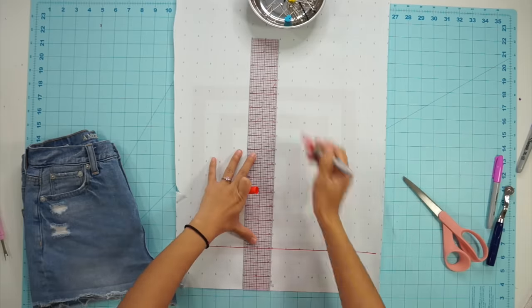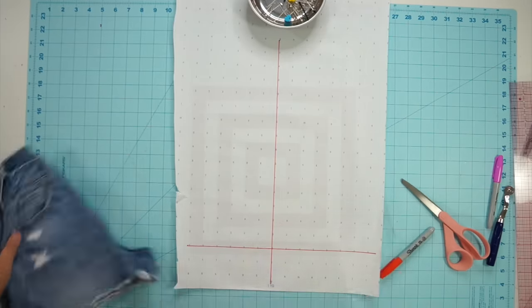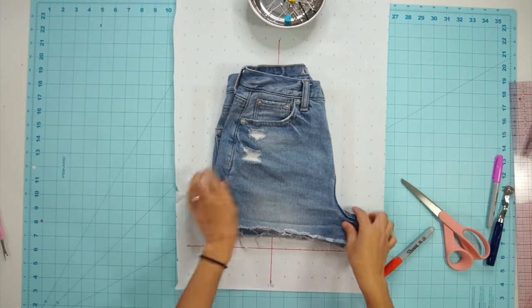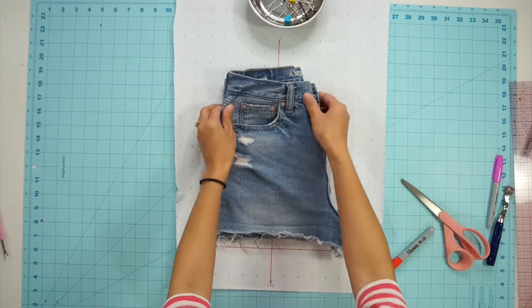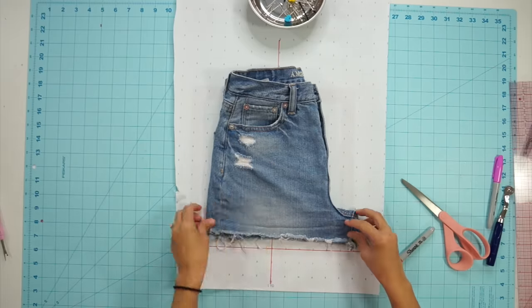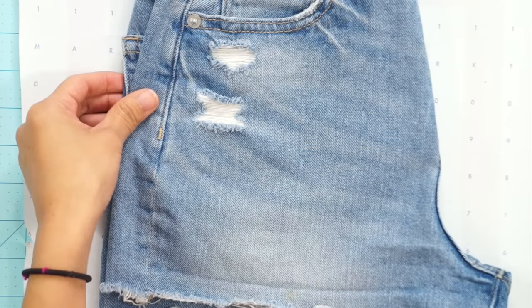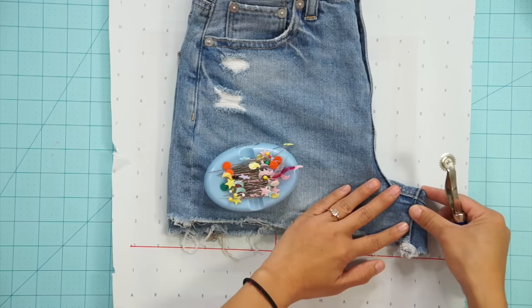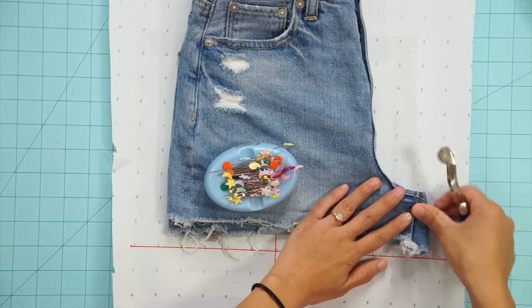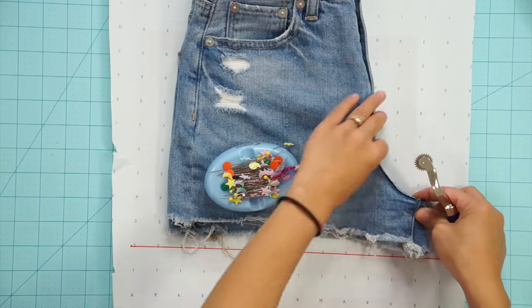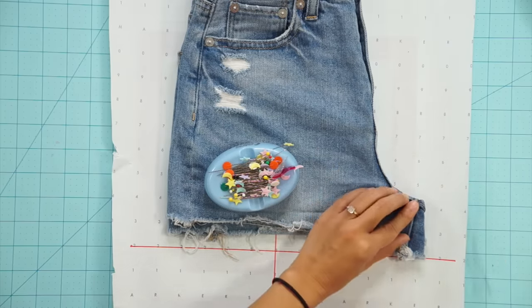I drew a straight line down my paper for the grain line and will line it up with the grain line of my clothes. To find the grain line on my clothes I just look for the vertical threads going down the shorts and line that up with a straight line I drew on my paper. This way we know our pattern is on grain. You can use weights to hold your clothes in place so it doesn't move or you can just hold it down like me.